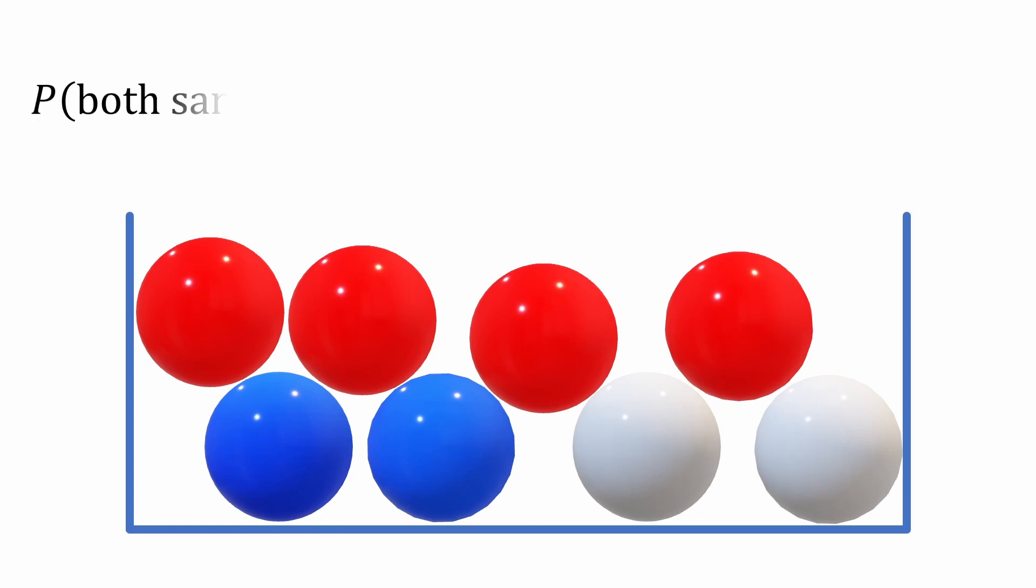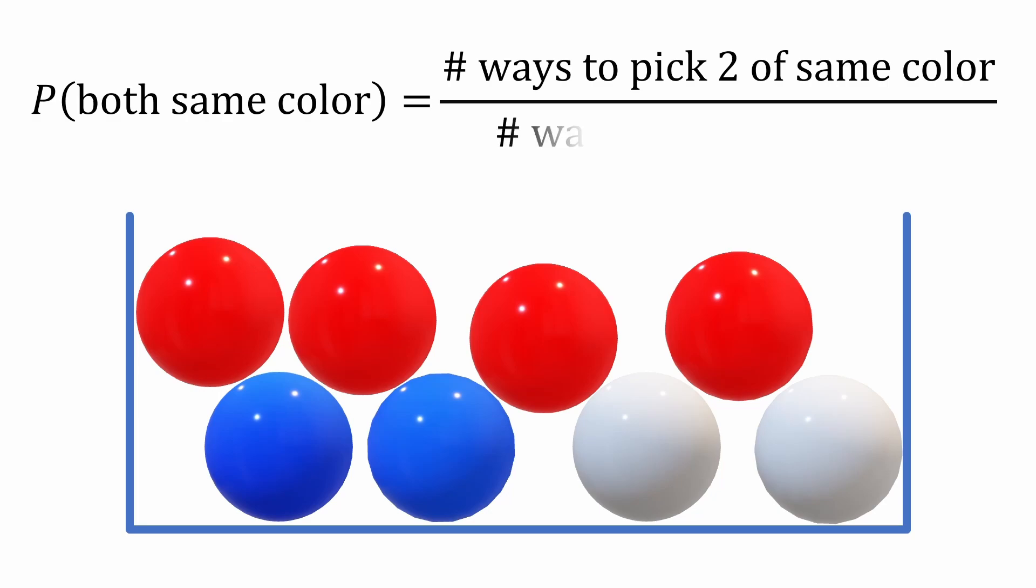We'll define our probability as the number of ways to pick two balls of the same color divided by the number of ways to pick any two balls from the eight in the box.